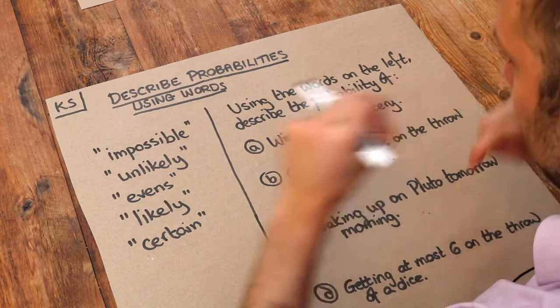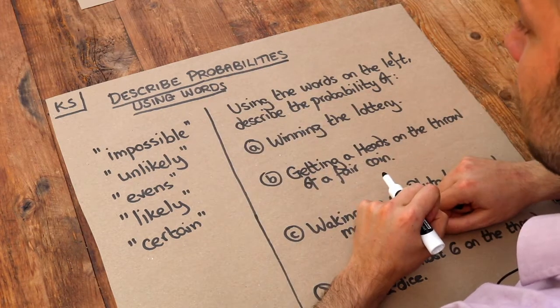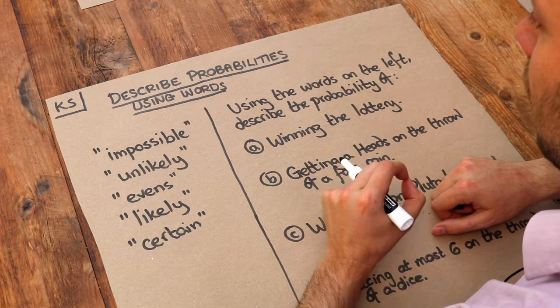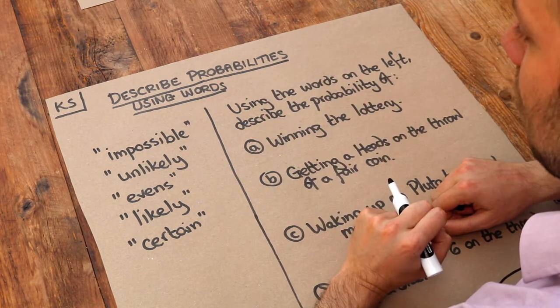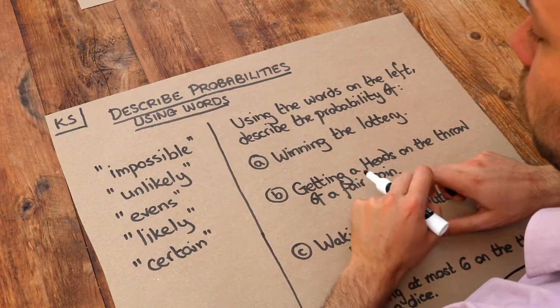Now we can represent these kind of random events in mathematics, and we can describe how likely something is to happen using something called a probability.